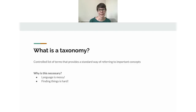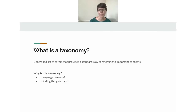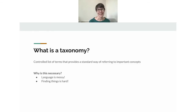So what is a taxonomy? It really is just a controlled list of terms, usually controlled by a taxonomist but not always. That list of terms provides a standard way of referring to whatever concepts are important in the space it's operating in. This is necessary because, as we saw with the bills, language is messy and finding things is hard — we've all had experiences struggling to find something.